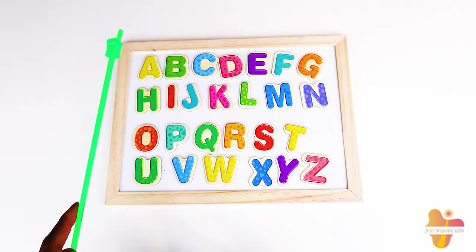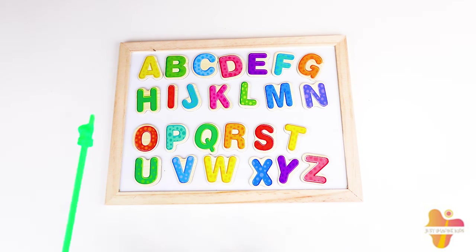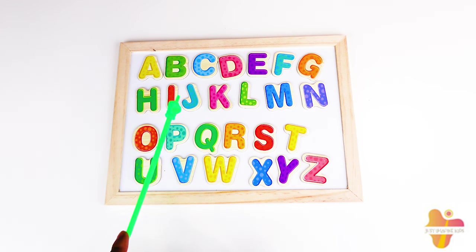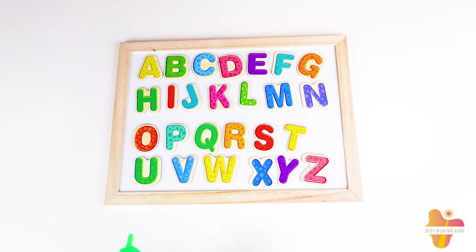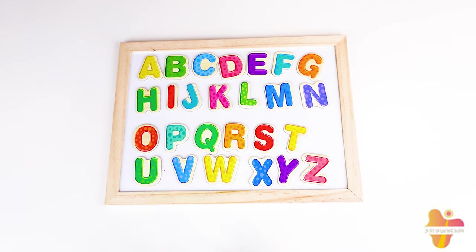So we have Big A, Big B, Big C, Big D, Big E, Big F, Big G, Big H, Big I, Big J, Big K, Big M, Big N, Big O, Big P, Big Q, Big R, Big S, Big T, Big U, Big V, Big W, Big X, Big Y, and Big Z!